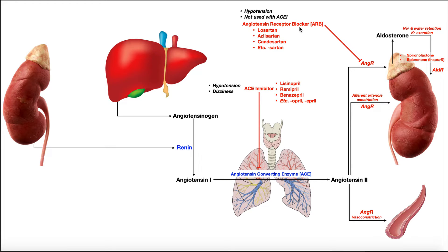You can identify an angiotensin receptor blocker because the drug name ends in '-sartan.' All of them end in '-sartan' — losartan, azilsartan, candesartan. When you see that suffix, you're dealing with an angiotensin receptor blocker. Like the ACE inhibitors, we also have to worry about hypotension and, with hypotension, syncope, fainting, and falls. Generally speaking, angiotensin receptor blockers are not used in conjunction with an ACE inhibitor and vice versa. If a patient is on an ACE inhibitor, they can be on other blood pressure drugs, but generally one of those will not be an angiotensin receptor blocker.